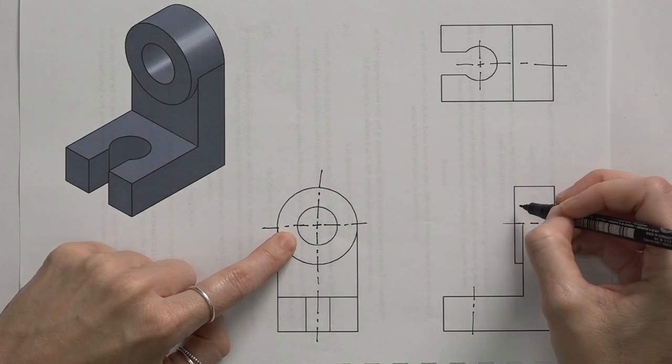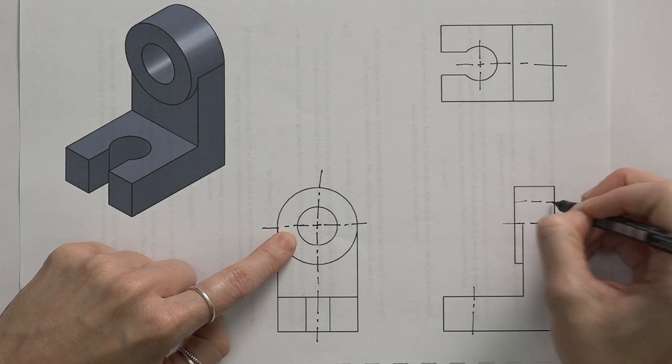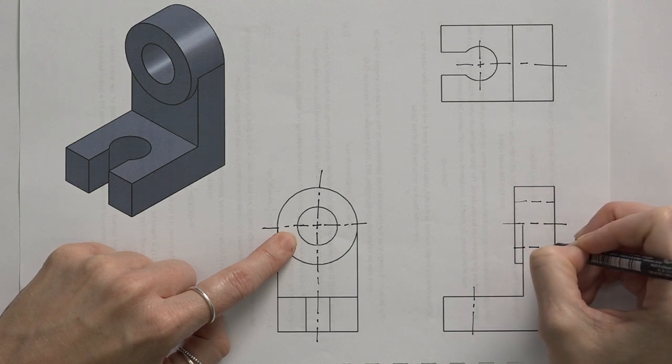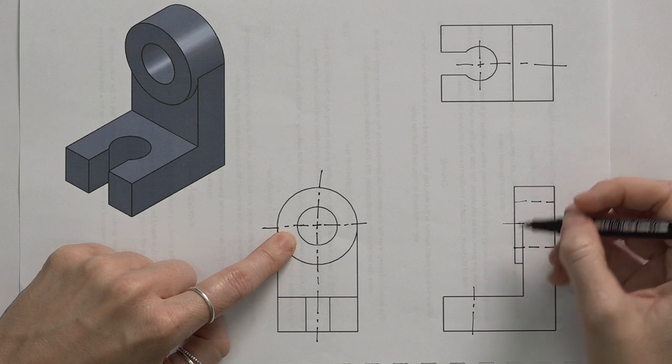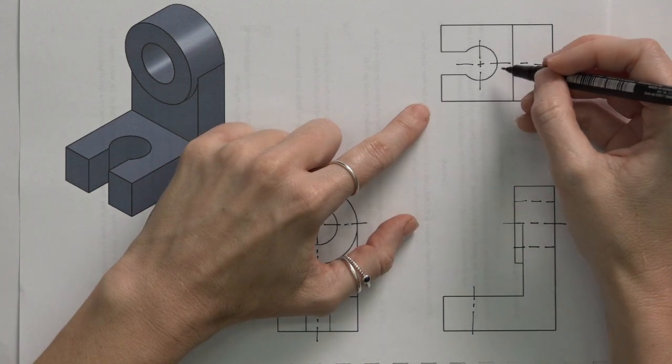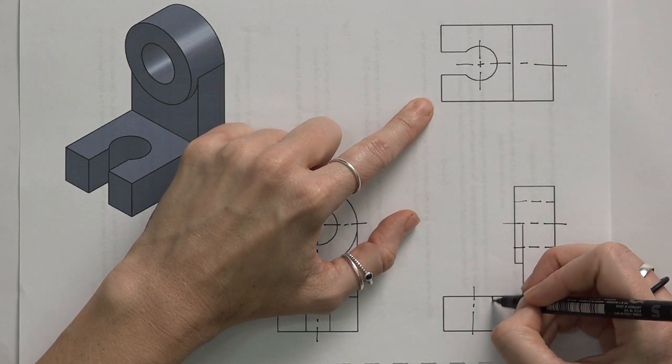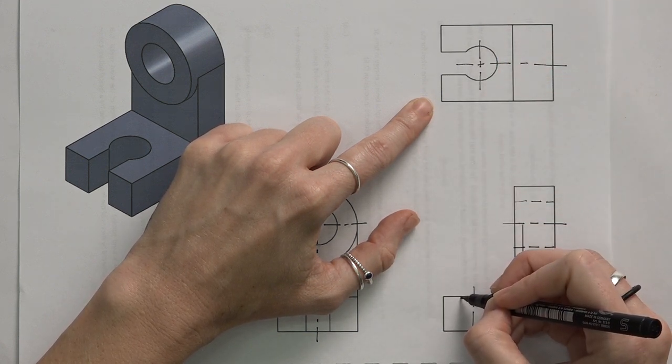So we can decide, let's say for example, we want to show the hole here at the top. So we have our hidden lines to indicate that. And the slot here at the bottom, what we want to show is this side of the slot and that side of the slot.